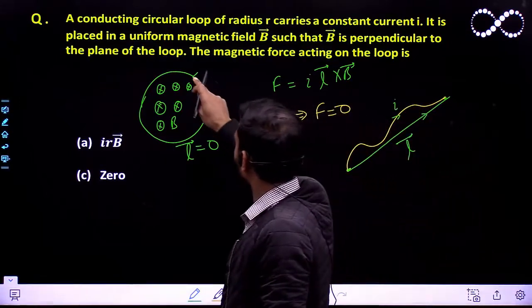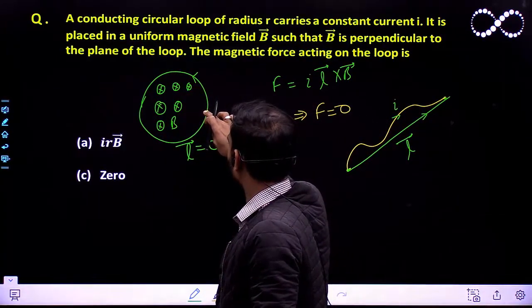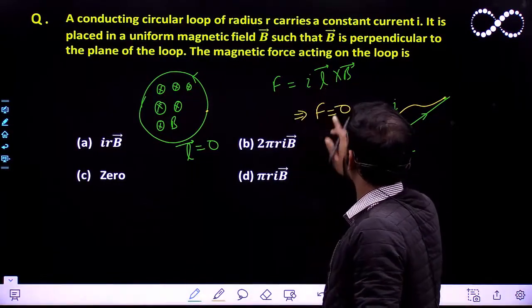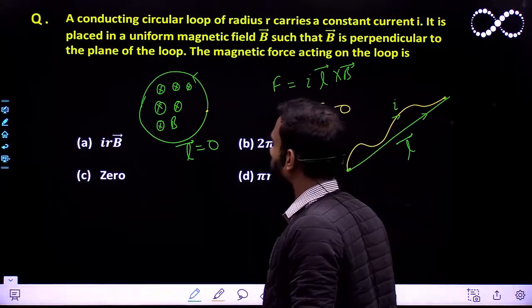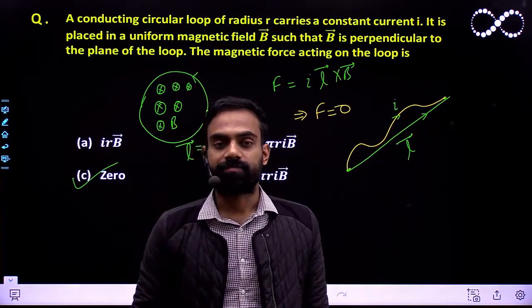But here since this wire is circular, the starting point and end point will be the same. So the L vector will become 0. So since the L vector is 0, the force will also be 0. So let us see which option is matching here: option C. Students, I hope you understood this question. Thank you.